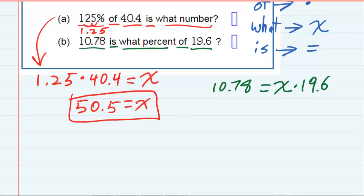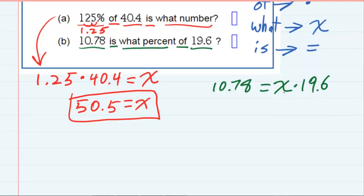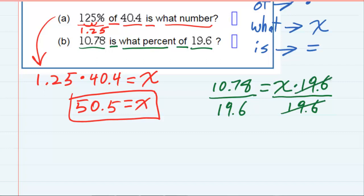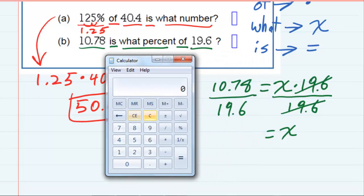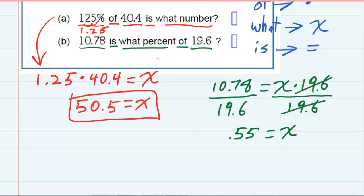To solve this one for x, we need to get that 19.6 over to the other side, so we undo multiplication with division. Dividing both sides by 19.6 cancels on the right-hand side, leaving just x. Using the calculator, 10.78 divided by 19.6 equals 0.55. But we're looking for a percent, so we convert this decimal into a percentage by moving the decimal two places to the right, giving us 55%.